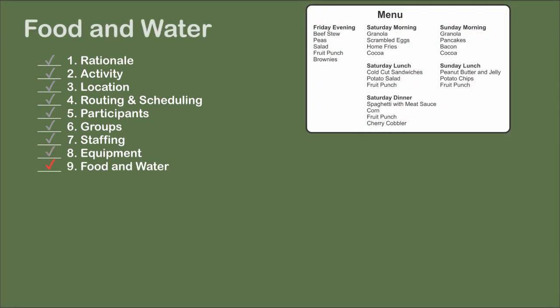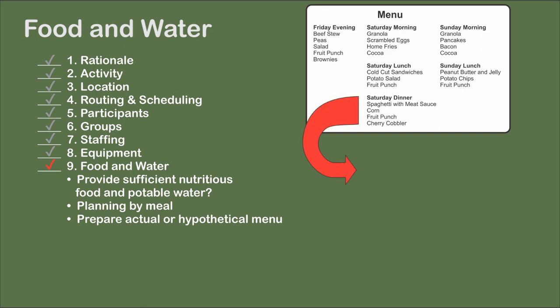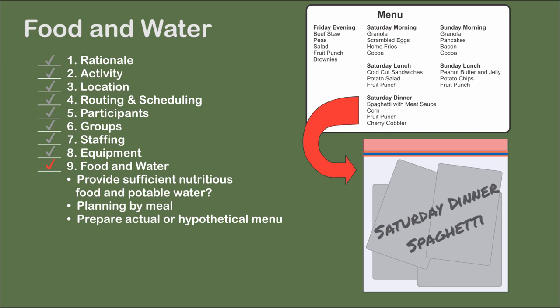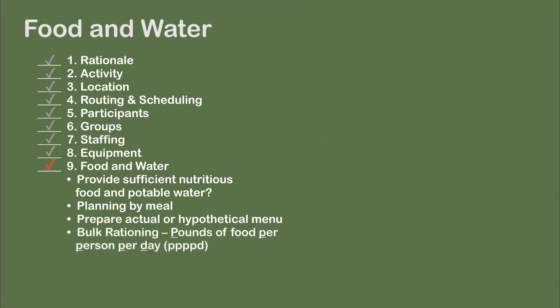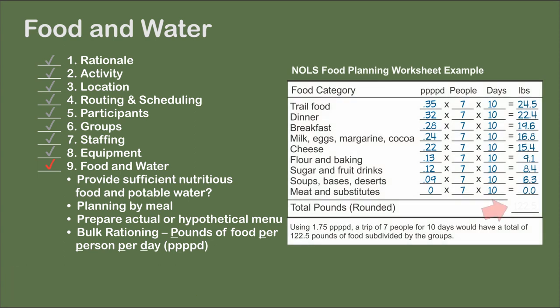Food planning is either by meal or bulk rationing. Planning by meals works well on short trips like weekend excursions — create a menu, multiply the portions by the number of people, and pack individual meals in plastic storage bags. Meals can use fresh food, freeze-dried, or dehydrated foods, or combinations of each. Used on longer backcountry trips, the Knolls bulk rationing approach determines the pounds of food per person per day. Depending on trip conditions, plan on between one and a half to two and a half pounds per person per day, calculated by food categories.